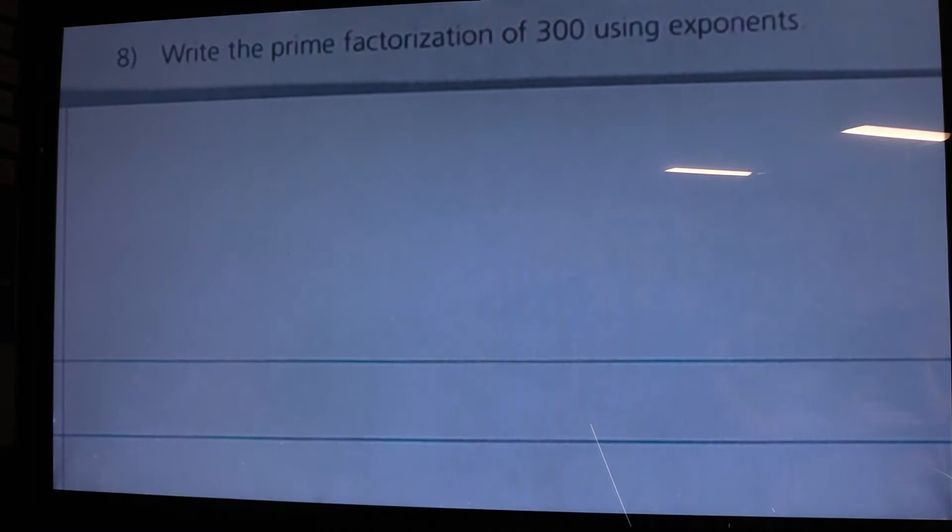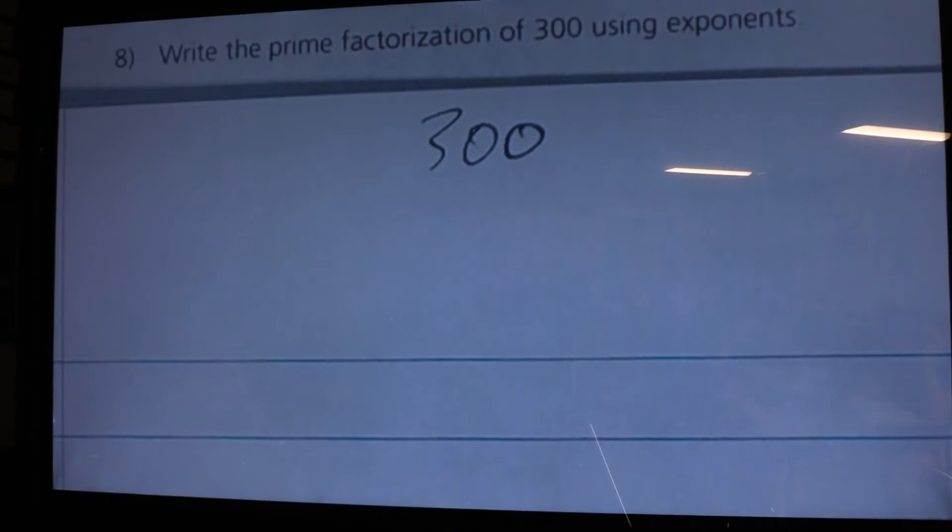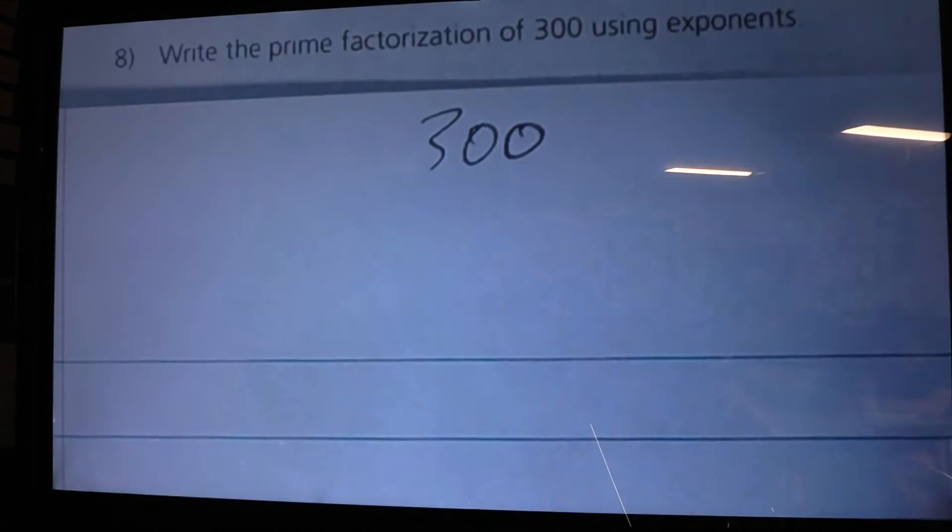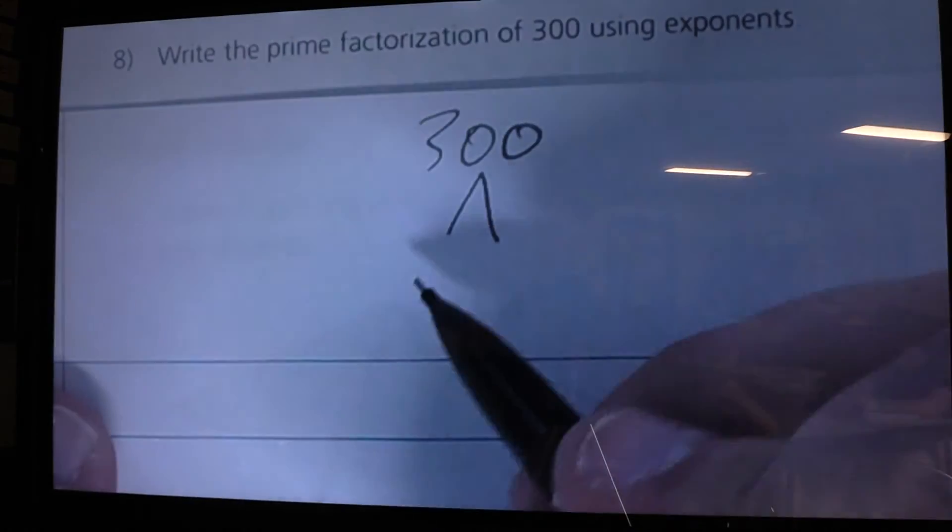Now, you can start with a factor tree any way you want. When you have a number like 300, I could say 50 times 6, I could say 2 times 150, I could say 3 times 100. There's different ways, but your prime factorization will always turn out the same. On this one, I think I'm going to start it out - because I don't want to have a huge factor tree, I'd rather have it become more of a bush. I'm going to say 6 times 50.